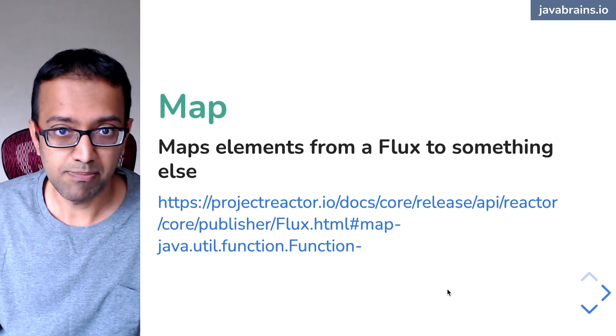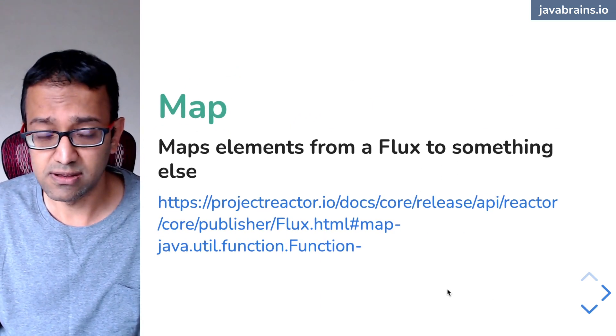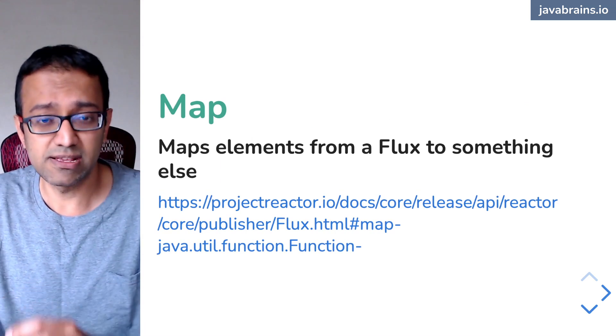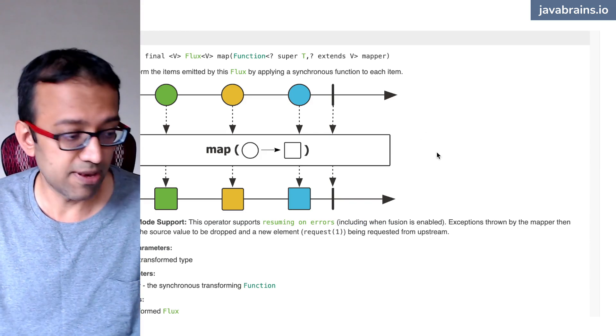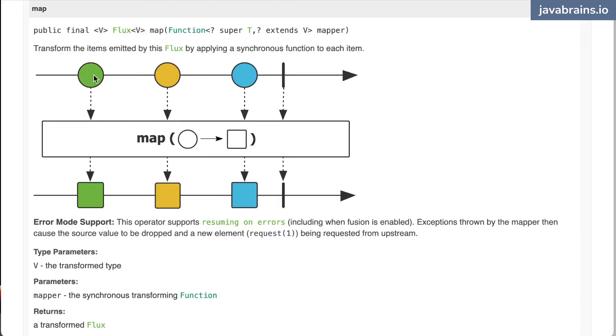We have something called map, again similar to a collection stream map. Basically it replaces one with something else. Looking at the marble diagram, it is going to map all the circles to squares, that's the transformation. So here is a flux with all the circles, with a completion event, here's a new flux generated with just a bunch of squares. It's basically transformed this thing to this one.